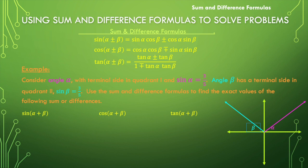Let's focus on angle alpha and look at a reference right triangle labeled appropriately. If we know that sine of alpha is three over five, the opposite side is three and the hypotenuse is five. Using the Pythagorean theorem: three squared plus x squared equals five squared, so x squared equals 16, and x equals plus or minus four. Since angle alpha is in quadrant one, x will be positive four.